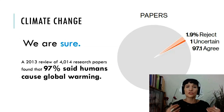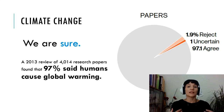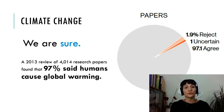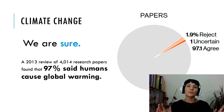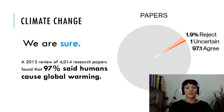We are sure that humans are causing global warming and climate change. In 2013, there was a review of over 4,000 academic papers, and 97% of these academic papers said that humans are causing climate change and global warming.